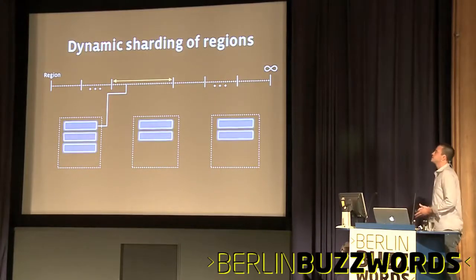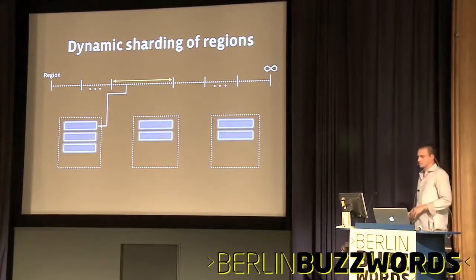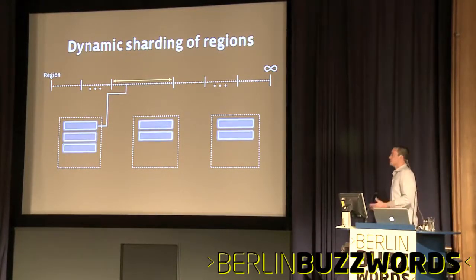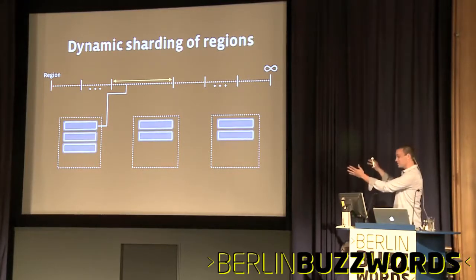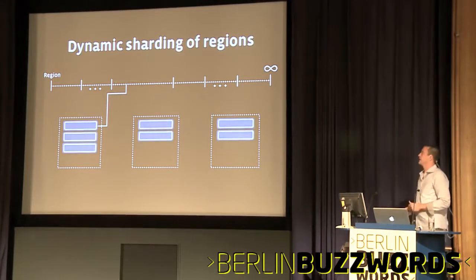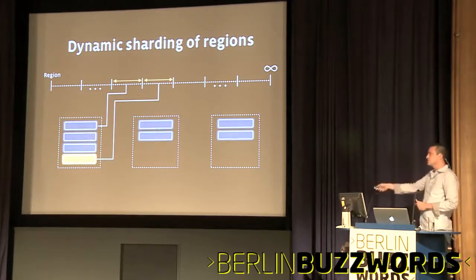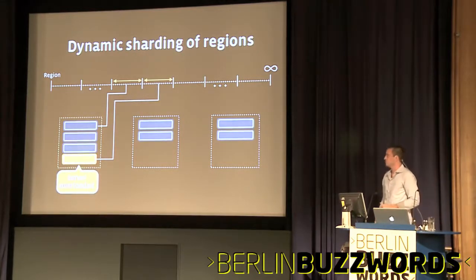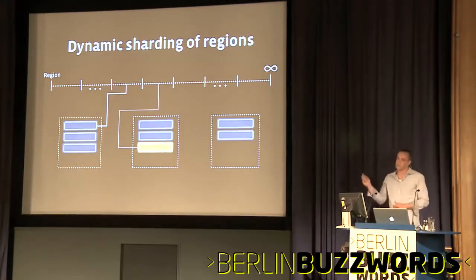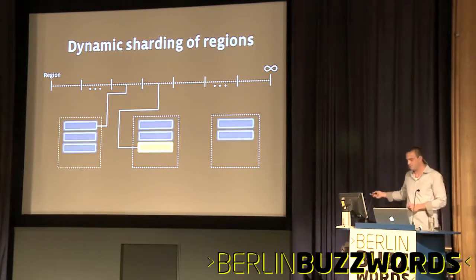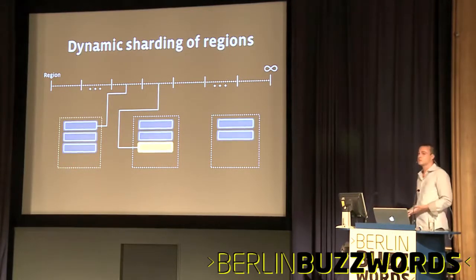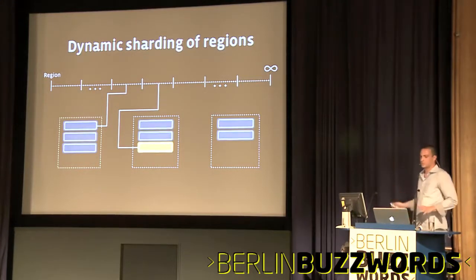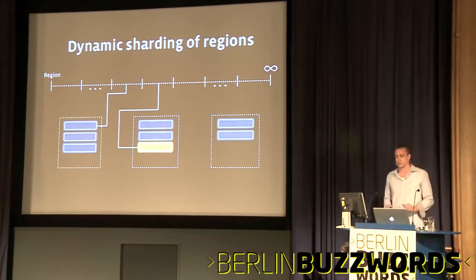The cool thing about HBase is that it does dynamic sharding of regions — regions are kind of shards. So here we have a big region that keeps growing. HBase is automatically going to decide to split this region in half. If that server is overloaded because it has four shards, it will redistribute that shard to another server. All this happens transparently, so you really don't have to think about how your data is going to grow — HBase just takes care of it and load balances it for you.